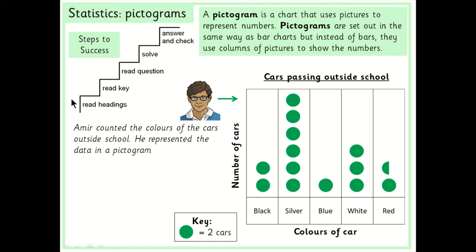So our first step is to read the headings. So we've got our title here, Cars Passing Outside School. If I look at the bottom here it tells me the colour of cars and at the side here it tells me the number of cars. So I've got black, silver, blue, white and red.